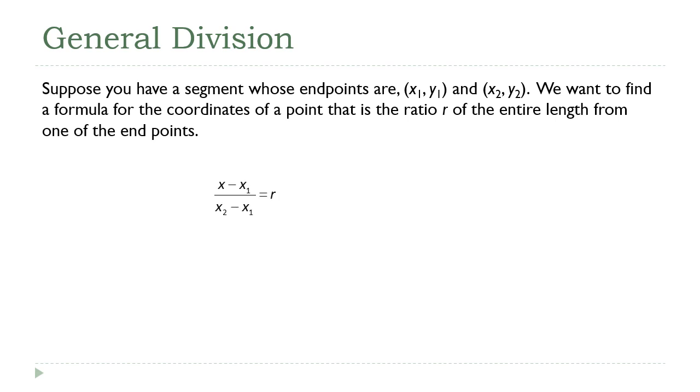And so we'll start with two very similar equations. Again, I just replaced the one-half with r. And if we solve the left one for x, we'll start by multiplying through by that denominator, x2 minus x1. And that gives us this equation: x minus x1 equals r times x2 minus x1. And then we'll just move the x1 over, and we get a formula for the x-coordinate. You do the exact same process over on the other side for y, and you get a remarkably similar formula.